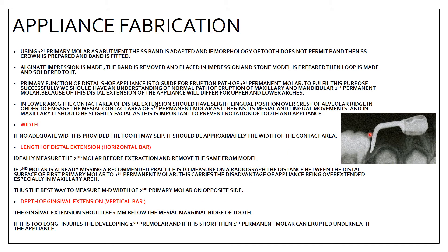The depth of the gingival extension (vertical bar) should be 1 mm below the mesial marginal ridge of the unerupted permanent molar. If the vertical bar is too long, it will injure the developing second premolar. If it is too short, the permanent molar can erupt underneath the appliance. Therefore, it must be ideally prepared at exactly 1 mm below the mesial marginal ridge.